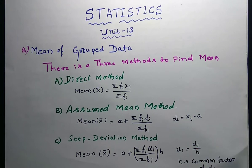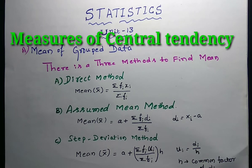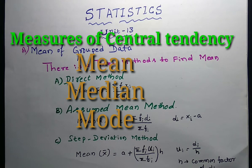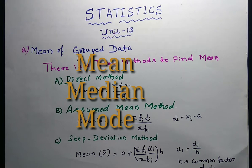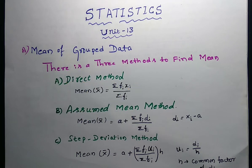In this unit we are discussing about measures of central tendencies for grouped data, in which arithmetic mean, median and mode are the measures of central tendency. In this session we are going to study about mean.